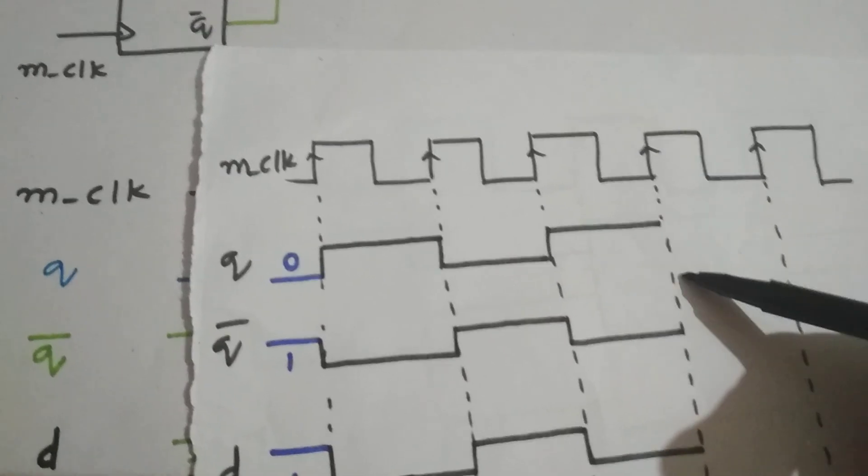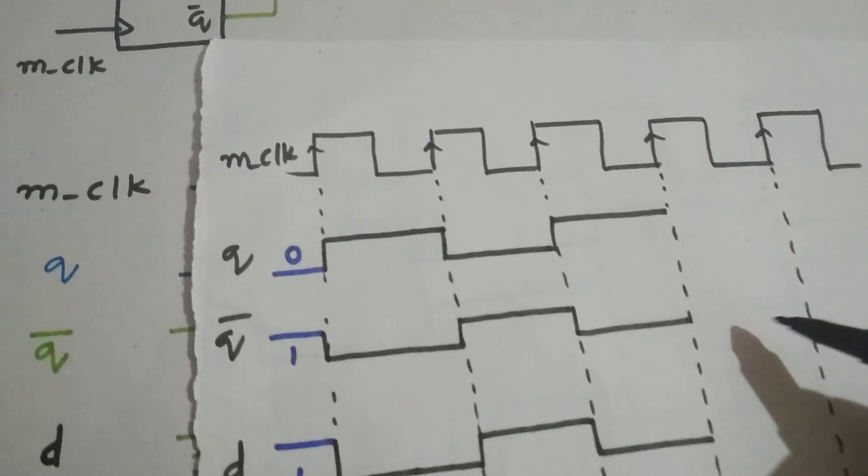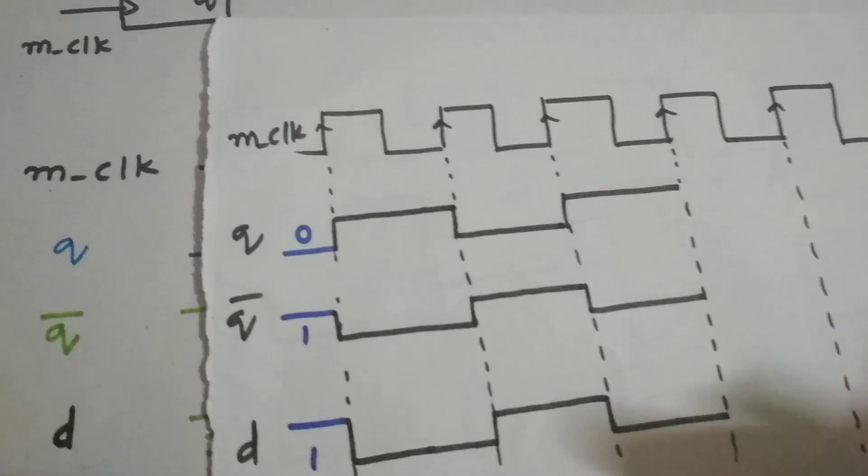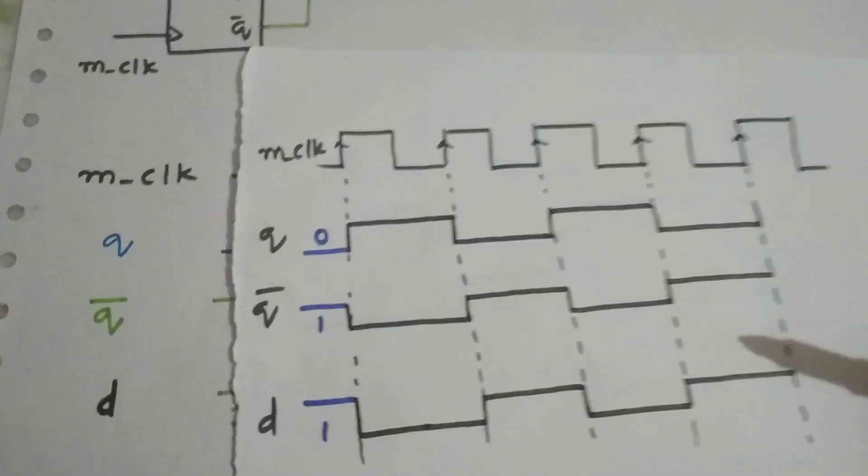Since Q bar is 0, D will also become 0, and again this D is fed back to Q. So Q will be 0 once again, and Q bar will be 1, and D will also be 1. So the waveforms look like this.